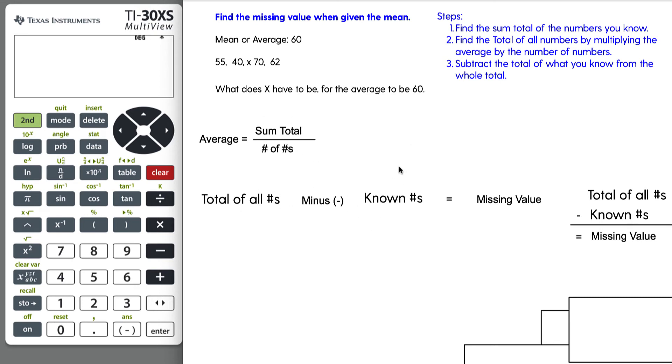So the first thing we want to do is actually find the total of the numbers that we know. So that's these numbers here: 55, 40, 70, and 62. So let's put these over here in the GED calculator. 55 plus 40 plus 70 plus 62, and therefore we know the total of known numbers here is 227.